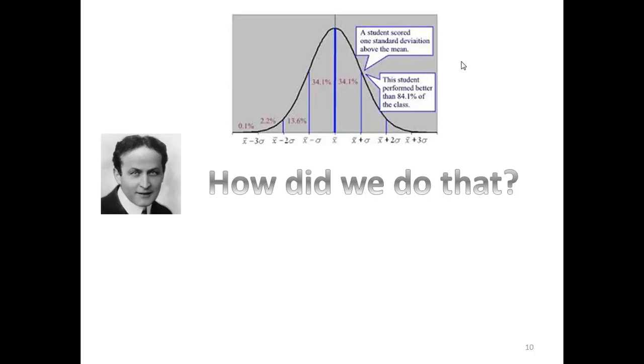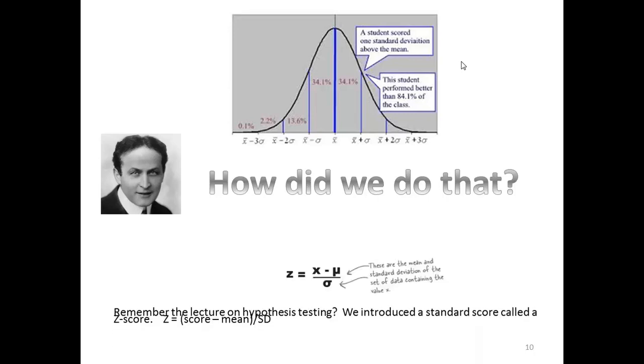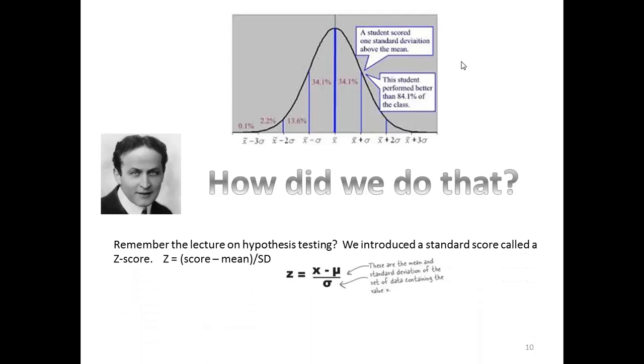Standard scores like Z and T and F can be converted to an address along the normal distribution curve. So that we can estimate the probability of that score occurring. Remember the lecture on hypothesis testing? We introduced a standard score called a Z-score. Where we take that individual raw score, subtract the mean and divide it by the standard deviation.